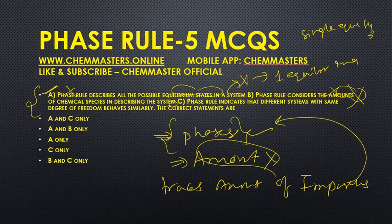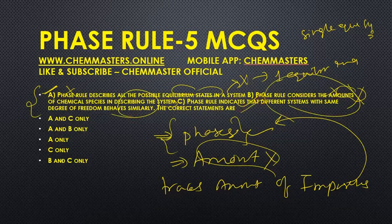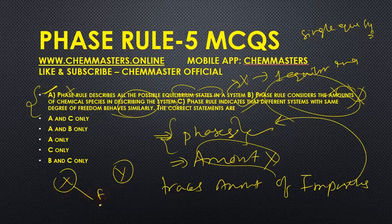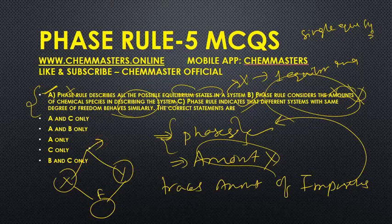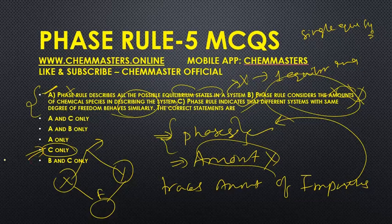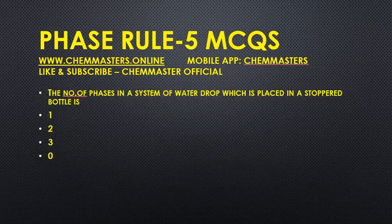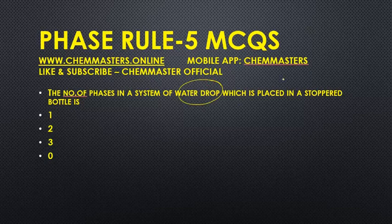The third statement says: 'Phase rule indicates that different systems with the same degree of freedom behave similarly.' This is the correct statement. If two systems X and Y both have a degree of freedom of three, then these two systems can behave similarly, and this is experimentally proved. So the third statement is the only correct one.